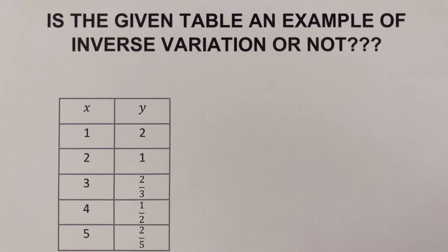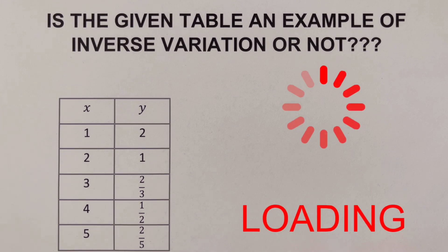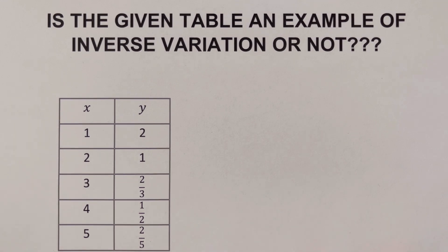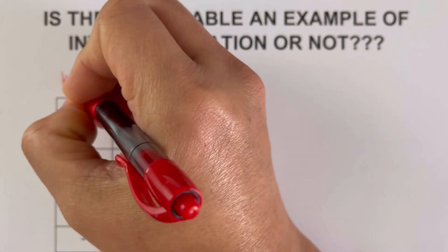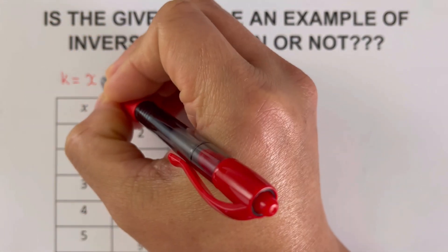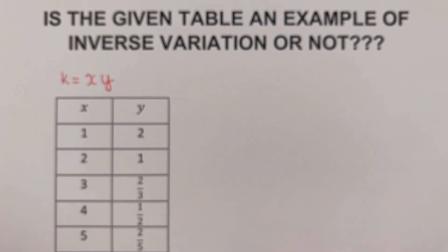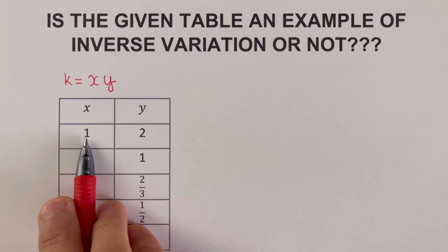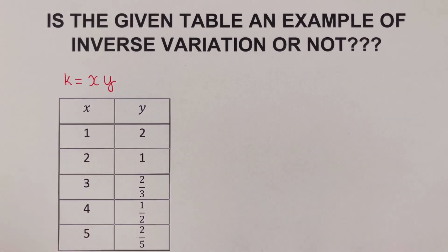I encourage you to pause this video and try the next problem on your own before checking the answer. To determine if this table is an example of an inverse variation, we solve for the proportionality constant k, which equals the product of x and y. We multiply the x and y values for each row.